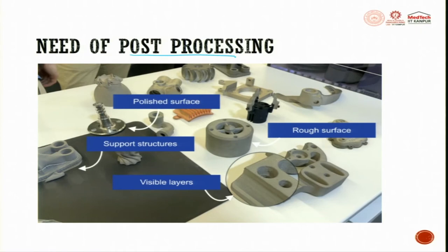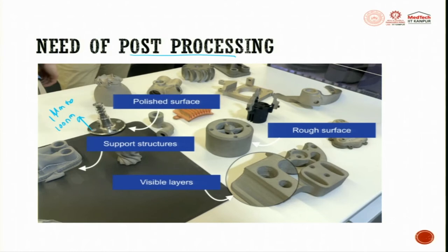Moving to the next topic: post processing. The most important thing in post processing is heat treatment; the other is roughness removal. You have a rough surface which is polished to get a very smooth or very low Ra - you can go from 1 micron down to 100 nanometer Ra. This Ra improvement increases the fatigue response of the component. You also have supporting structures that need to be chiseled and removed - all these things are done by post processing.